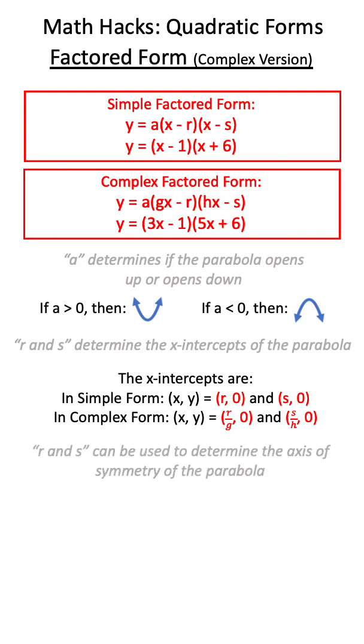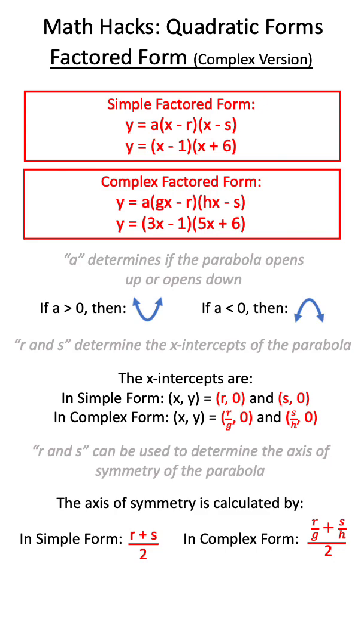Additionally, R and S can also be used to determine the axis of symmetry of a parabola. Unlike simple form, complex form again uses R over G and S over H in the equation.